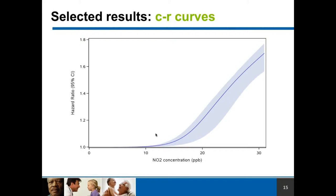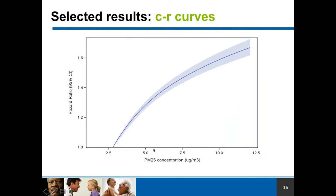The first thing we looked at was whether the pollutants were associated with the outcome in terms of whether there is a linear relationship. This is presenting a concentration-response curve between NO2 exposure during the whole pregnancy period and the incidence of childhood asthma development. We are seeing a sort of linear increase even at low levels of exposure — an increased risk that increases monotonically. And we are seeing this same shape for PM2.5 as well. These are important because they tell a lot about the relationship and can be very important for regulatory purposes.